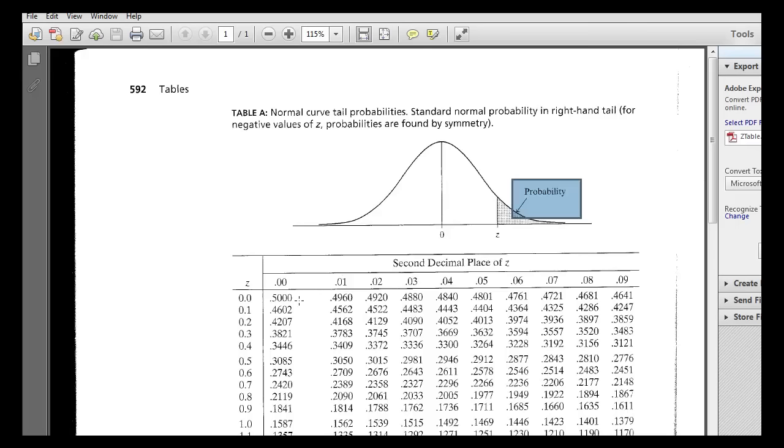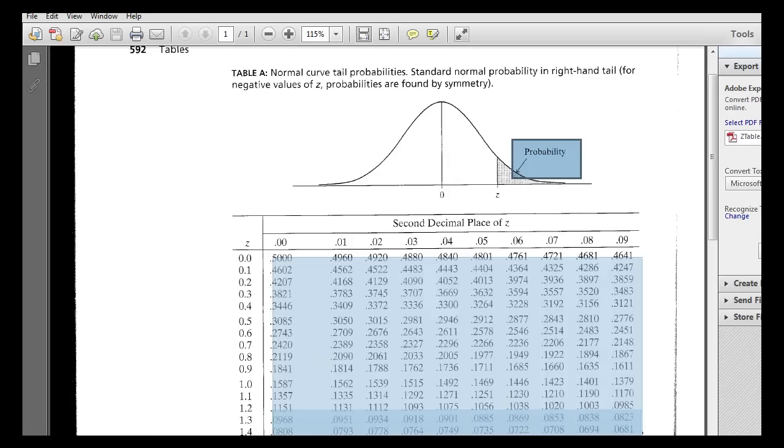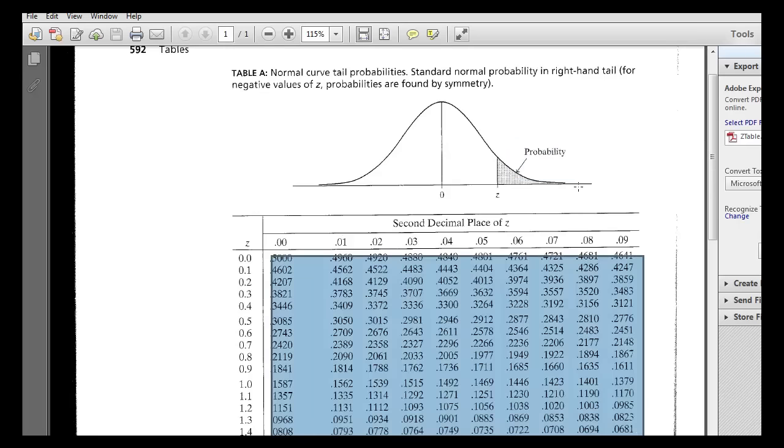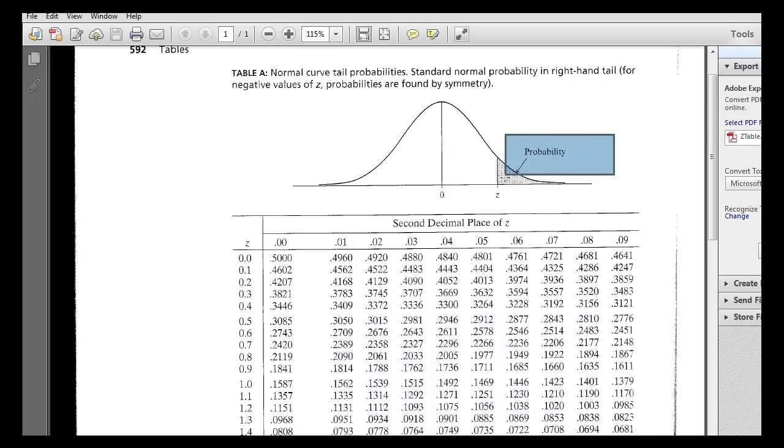And basically what's happening with this is all the numbers in the table are possible values for what we're calling a p-value. And a p-value is the proportion of observations that are to the right of specific z's. That's what a p-value is.